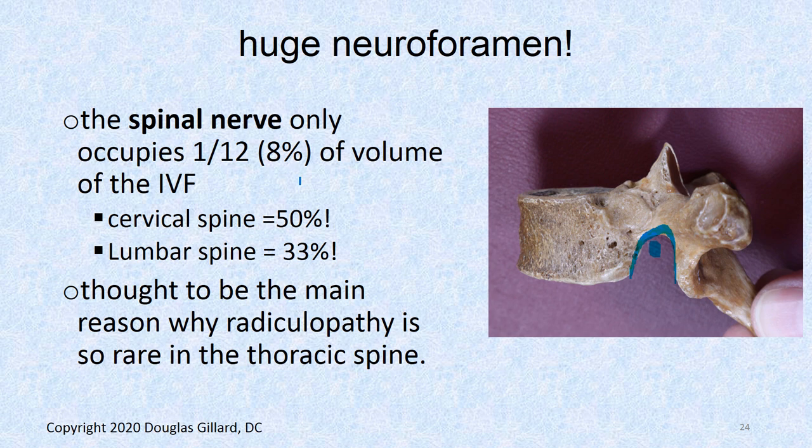Because of this so much wiggle room, this is one of the main reasons that radiculopathy or radicular pain is so rare in the thoracic spine. Radiculopathy means you've done a neurological exam and found damage. Radicular pain in the thoracic spine would follow the dermatome — a pain wrapping around in a horizontal plane around the lateral chest wall right to the front, following the intercostal nerve patterns.